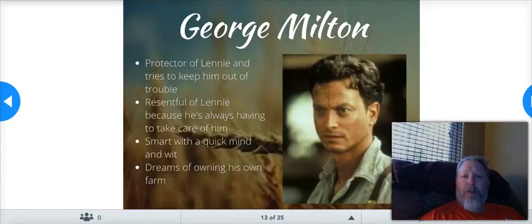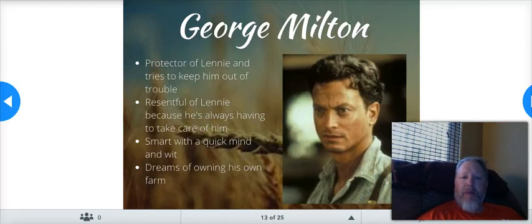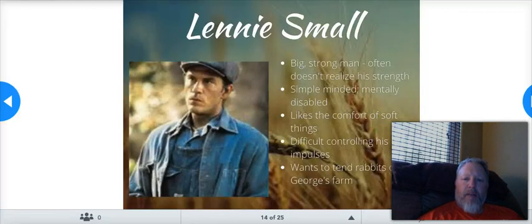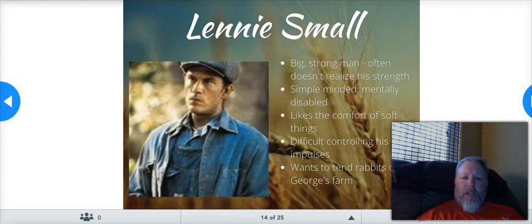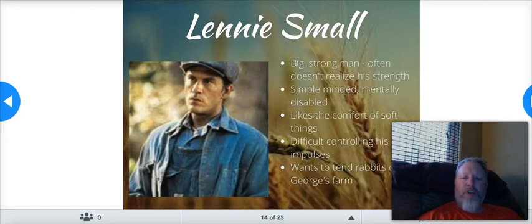Let's talk about some of our characters. George Milton: he is the protector of Lenny and tries to keep him out of trouble. He's resentful of Lenny at times because he's always having to take care of him — Lenny is a drag on George's life. George is smart with a quick mind and wit; he dreams of owning his own farm. Lenny Small — kind of an oxymoron because Lenny is a big strong man who often doesn't realize his strength. He's simple-minded, mentally disabled, likes the comfort of soft things, has difficulty controlling his impulses, and wants to tend rabbits on George's farm.